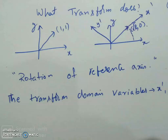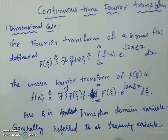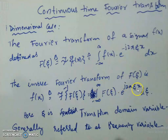This is a very basic thing you learned in 6th or 7th standard, and we are still applying the same concept in your final year. What we do in transforms is a rotation of the reference axis. We are only talking about unitary transforms here. We already discussed what a unitary matrix multiplication does — it only does rotation. The continuous-time Fourier transform is one such transform. The Fourier transform of a signal f(x) is defined as F(ζ) = ∫₋∞^∞ f(x)·e^(−j2πζx) dx, and the inverse Fourier transform is f(x) = ∫₋∞^∞ F(ζ)·e^(j2πζx) dζ.